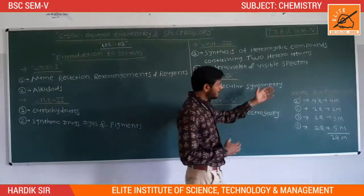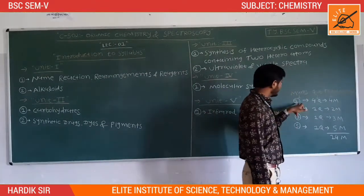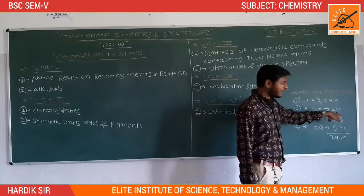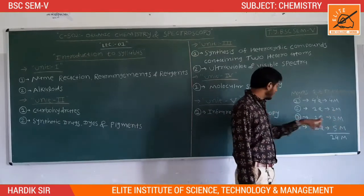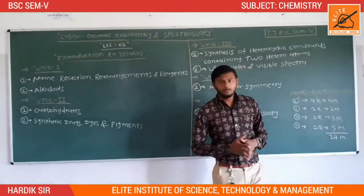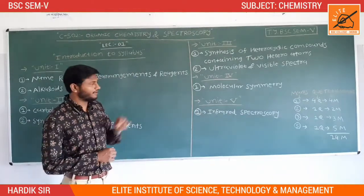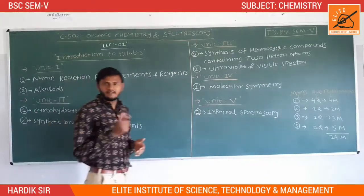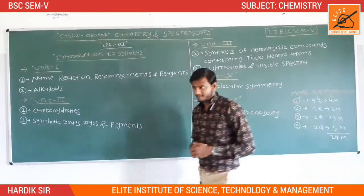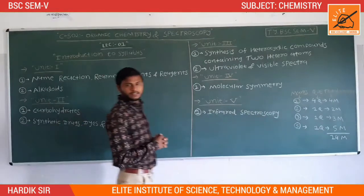Now we learn about the marks distribution. There is one 1-mark question, one 2-mark question, one 3-mark question, and one 5-mark question, totalling 14 marks per unit. Each and every unit has 14 marks, so total marks is 70, and internal marks is 30, making the total paper marks 100. Our syllabus is divided into five units and eight chapters.